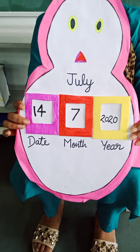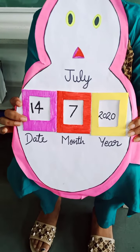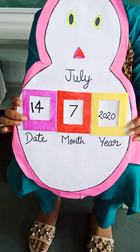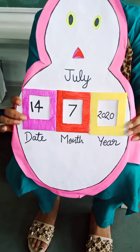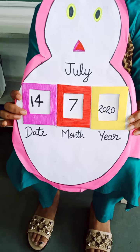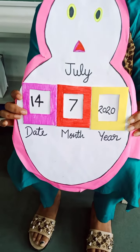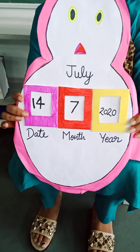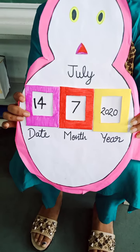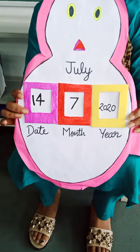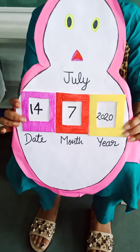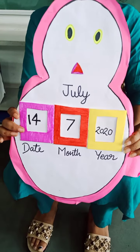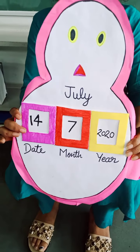The months of January, March, May, July, August, October and December have 31 days. The months of April, June, September, November have 30 days.